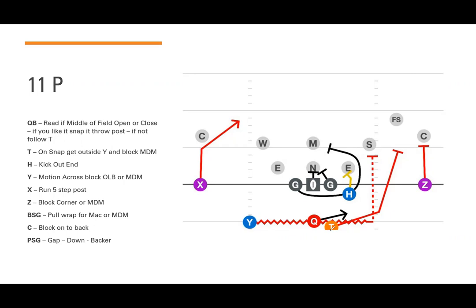The running back is essentially a cleanup blocker — he picks up the most dangerous man available coming at the quarterback. The H is going to kick out the end. We allow the H some autonomy: if the end is outside shade, he can shift to seal that end inside. On this buck sweep, we want to kick the end in. In nine-man football, the H handles that kickout — in 11-man you'd use the play-side guard — so we got creative to seal that C gap wide open.